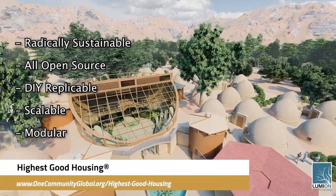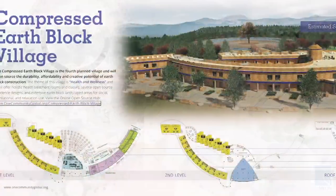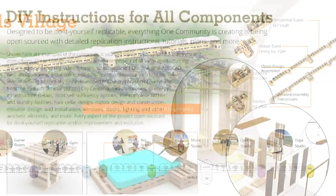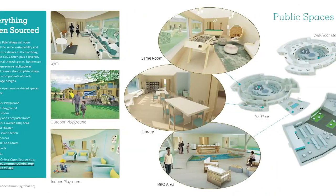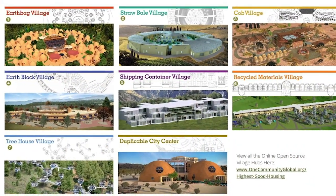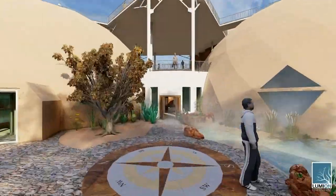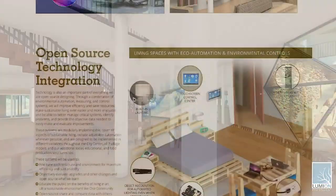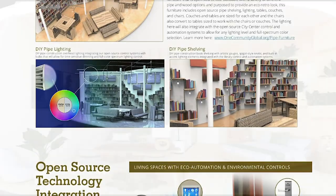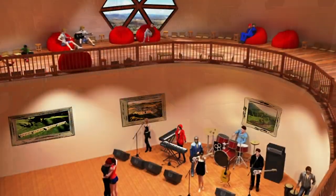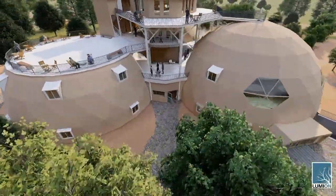The One Community Approach to Highest Good Housing is eco-artistic home building that is affordable, sustainable, do-it-yourself duplicable, resource and space efficient, and consists of seven different sustainably constructed village models. One Community is also creating an open-source duplicable city center designed to be LEED Platinum certified, provide 12 guest rooms, dining for over 150 people, and laundry and recreation space for over 300 people — all while saving money, time, space, and resources.